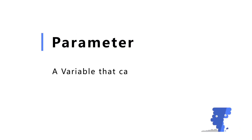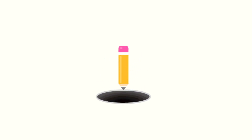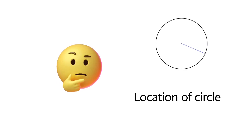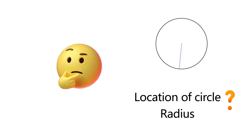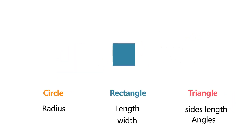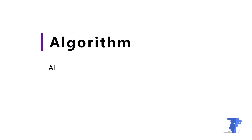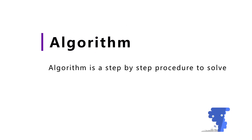A parameter is a variable that can be varied or changed. Simple example: take a pencil and paper and draw a circle. The circle's location and radius are very important parameters. For a triangle, the length, width, sides, and angles define it. So shape, size, and location are the normal parameters of a shape.